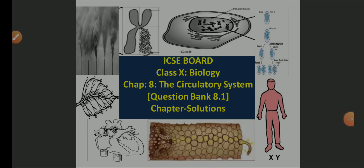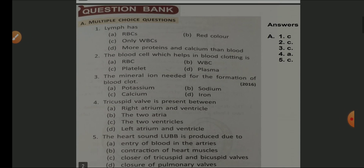Welcome back students. This is ICS UBOR Class 10 Biology. We are with Chapter 8, Circulatory System, and we are going to solve questions from the chapter — textual questions and their solutions. This is Episode Question Bank 8.1, Solution 8.1, and we begin with the first question: multiple choice questions.